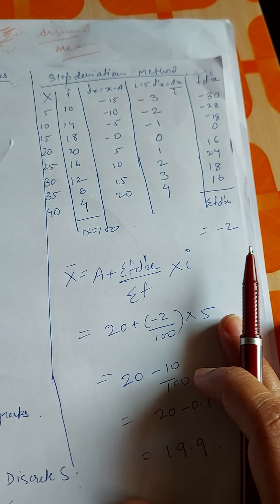fx, that is f into x, we have: 10 into 5, 10 into 14, 15 into 18, 20 into 20, 25 into 16, 13 into 12, 35 into 6, 40 into 4. Now it is time to calculate. Sigma fx, when we add all these numbers, what we get is 1990.